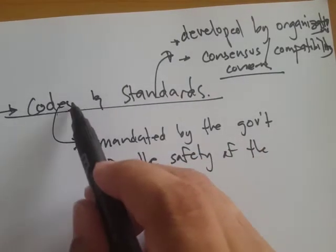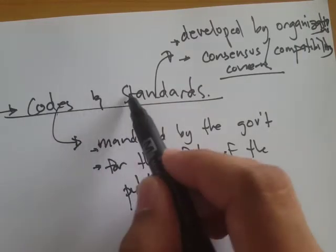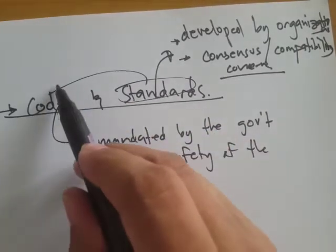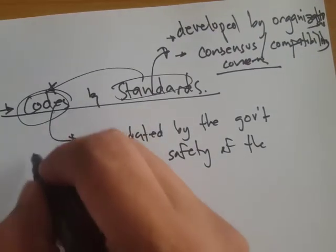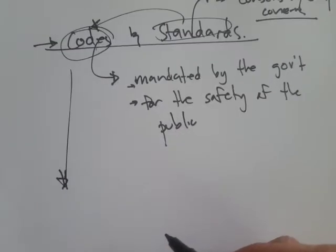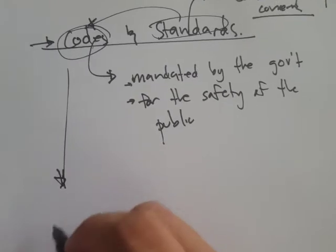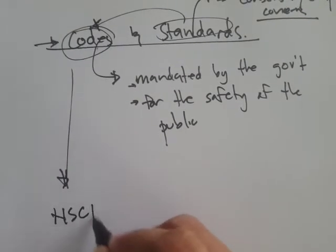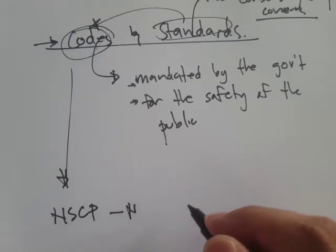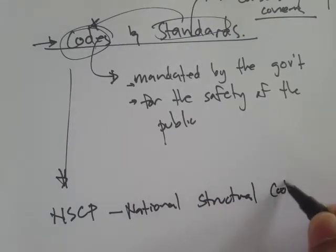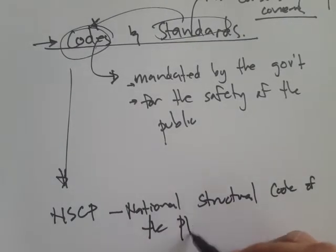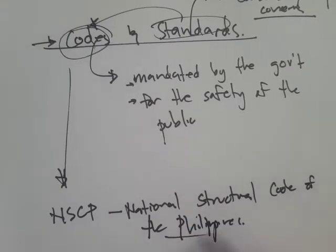Codes include a lot of standards. Some standards are adopted by the codes and then mandated by the government to be followed for the safety of the public. Some codes related to building construction or structural design include the NSCP — the National Structural Code of the Philippines — and the latest version is 2015.